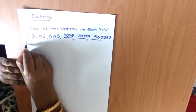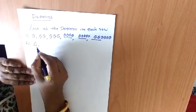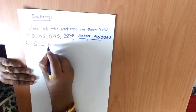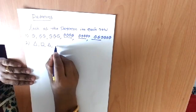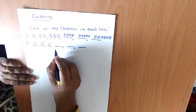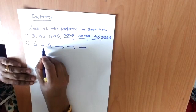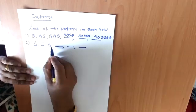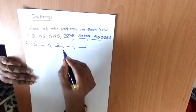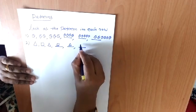Next example. Triangle, square, triangle — dash, dash, dash. What will come next? Here the pattern is: first triangle, then square, triangle, then square, triangle, then square, triangle, then square.